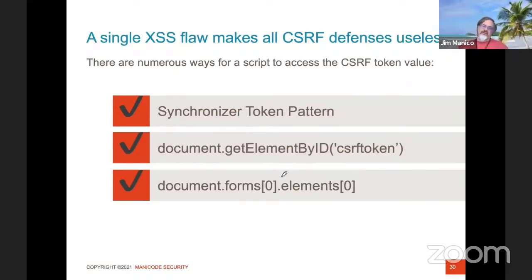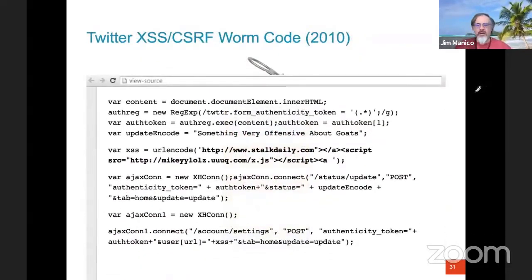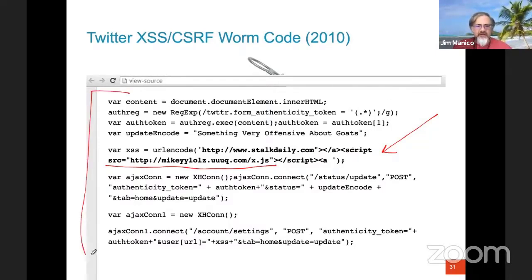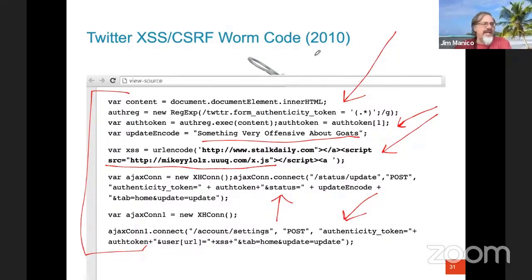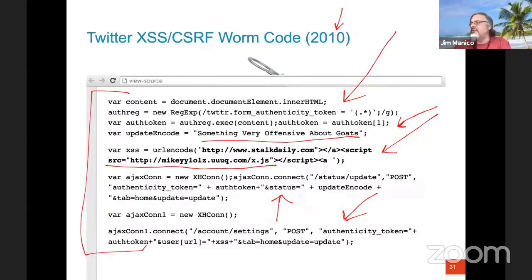You must also get XSS prevention correct — Content Security Policy and Trusted Types are critical here. If I have cross-site scripting on your site, I can defeat any CSRF defense. Twitter got hit where a URL vulnerable to XSS allowed raw script to run on Twitter's homepage. The attack grabbed Twitter's main HTML, ripped out the CSRF token, tweeted something offensive, and retweeted the same attack to spread it. Within three or four days, millions of Twitter users were tweeting about it. That's why one XSS vulnerability defeats all CSRF defenses.